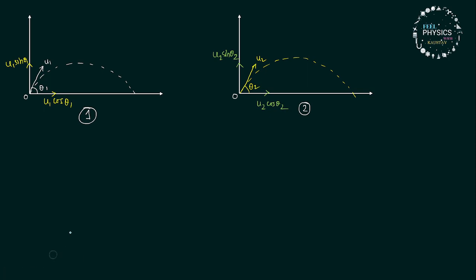Now, if after time t both reach certain points—for particle 1, let the point be x1, y1, and particle 2 reaches x2, y2—then we can apply the equations of kinematics to find their positions.